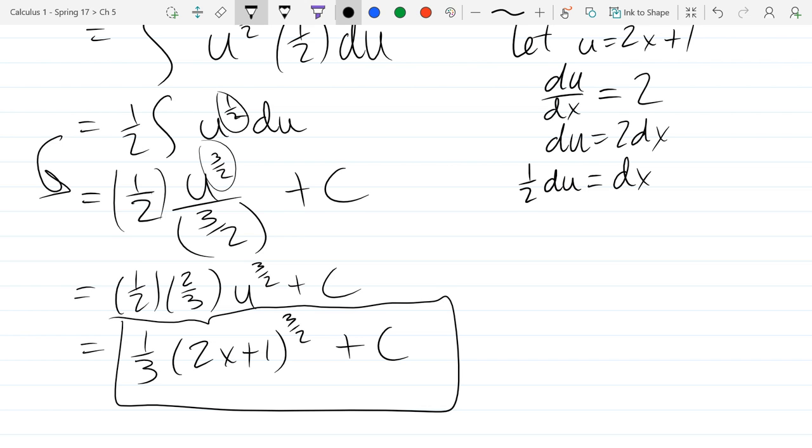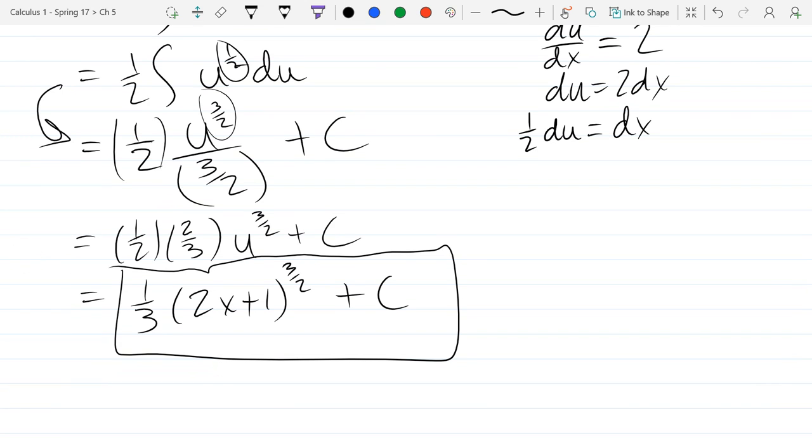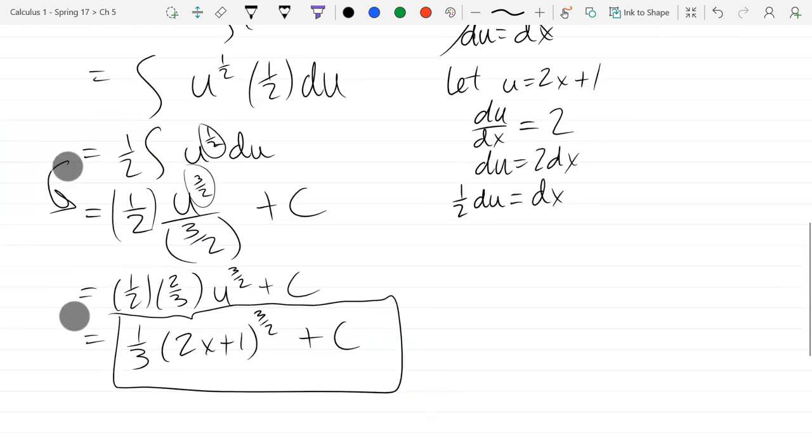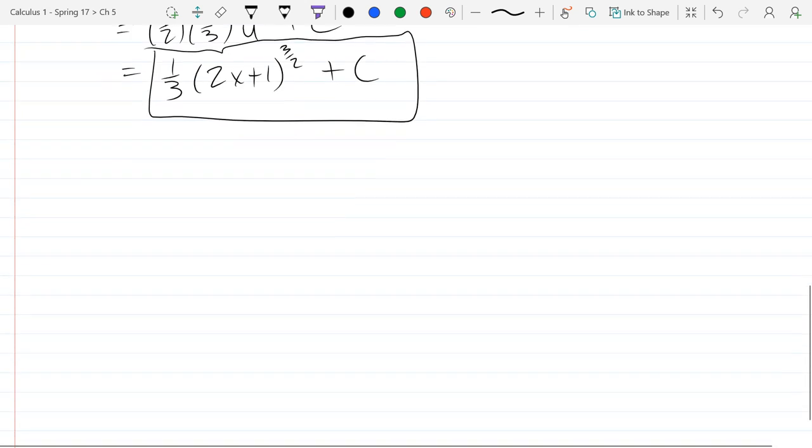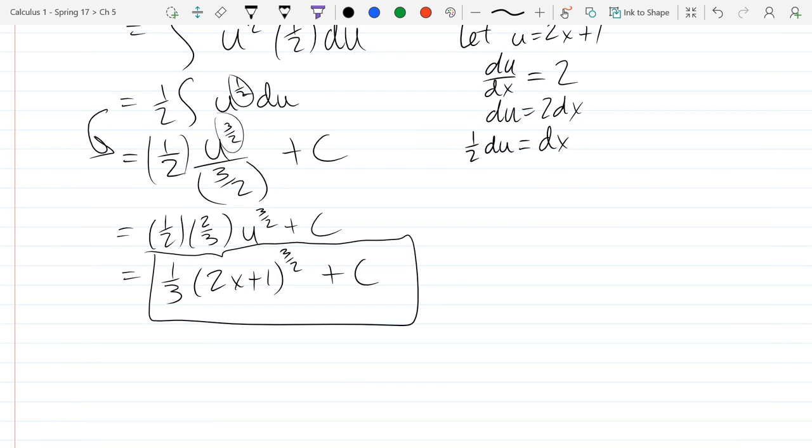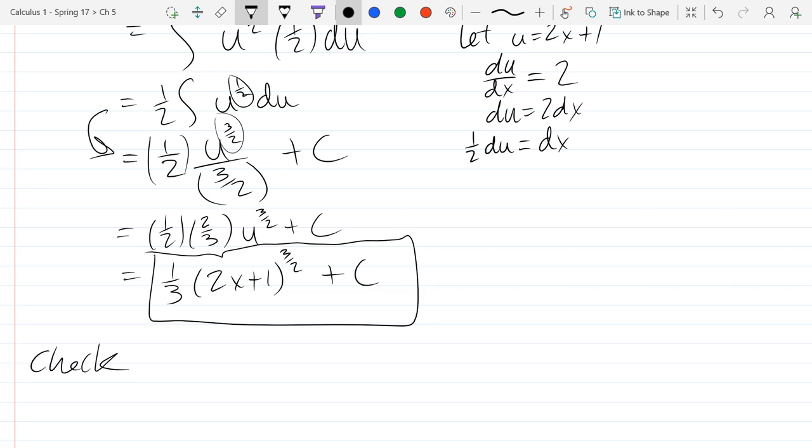Oh that's a good question - what did we just find? We did a u-substitution, we didn't find one. What did we find? What does this mean right here? We found the integral or the anti-derivative of square root 2x plus 1. So how do we check this? What if I just made all this stuff up and put a box around it and said we're done? Take derivative to check.